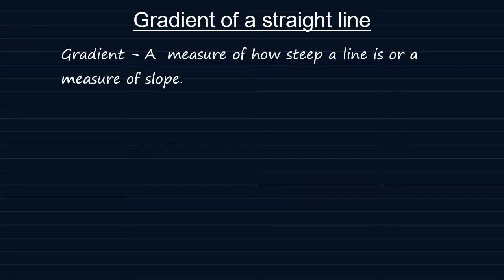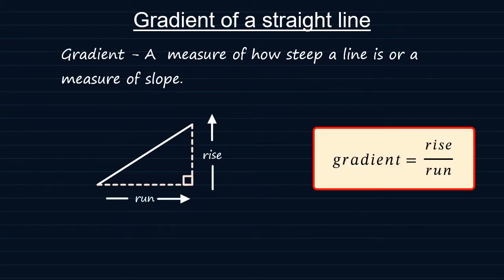The gradient of a line is a measure of how steep it is or a measure of the slope of that line. Consider this line. The gradient of this line can be calculated as rise over run. In other words, it's vertical displacement divided by horizontal displacement.